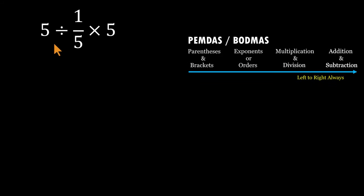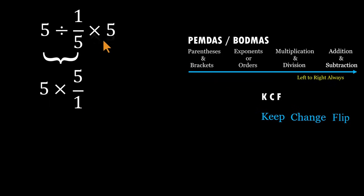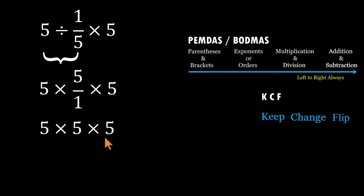So let's do it properly. Start at the far left: 5 divided by 1 over 5. Anytime we divide by a fraction, we use the KCF rule — Keep, Change, Flip. Keep the 5, change division to multiplication, flip 1 over 5 to 5 over 1. So now we have 5 times 5. Bring the last part down — the expression is now 5 times 5 times 5. The product of the first two 5s is 25. Finally, 25 times 5 gives 125.